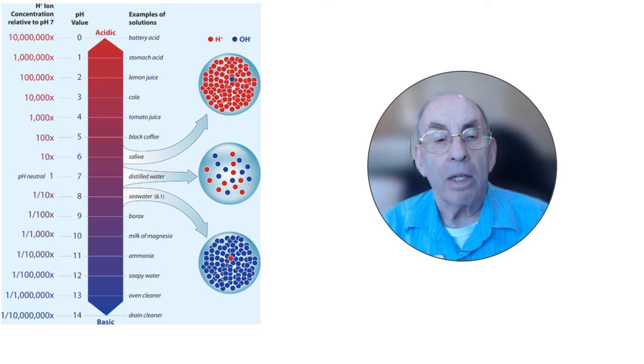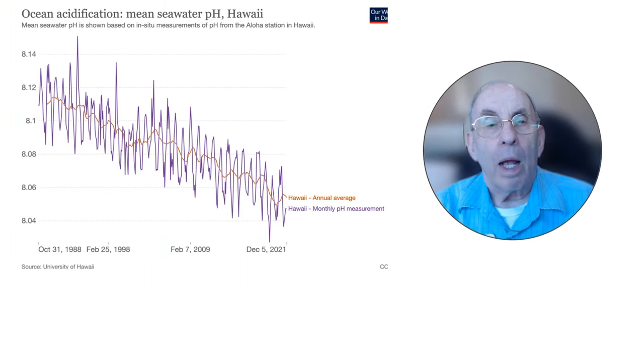Seawater is slightly alkaline, having a pH of approximately 8.1. This chart shows recent measurements of the ocean pH near Hawaii. Prior to the industrial revolution, the average ocean pH was about 8.2. Today, the average ocean pH is about 8.1. This might not seem like a big change,